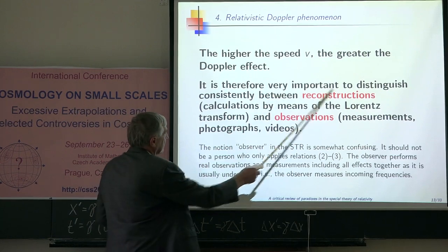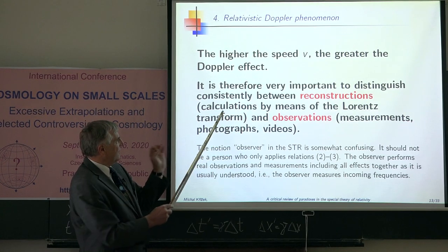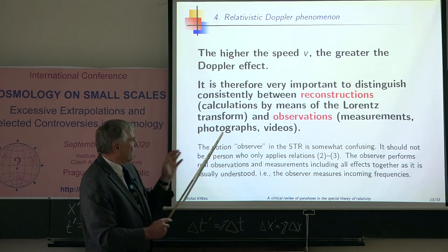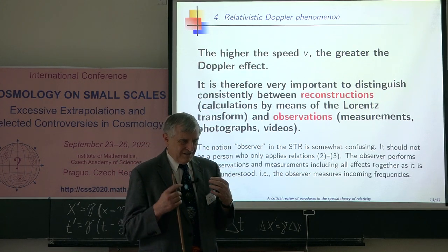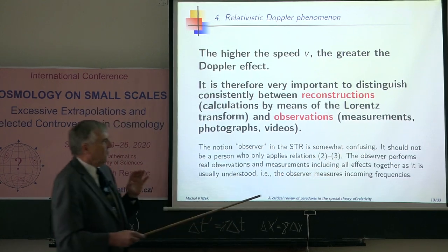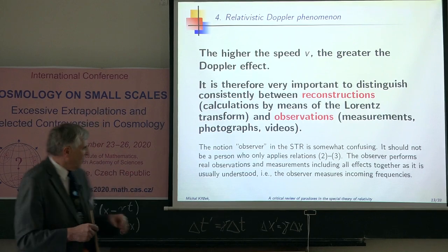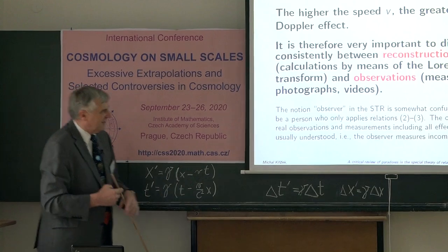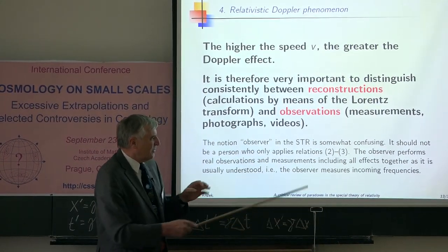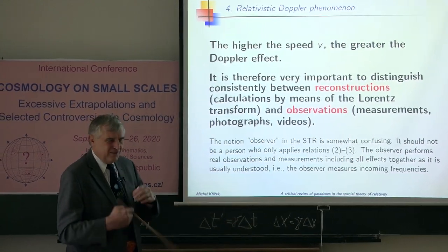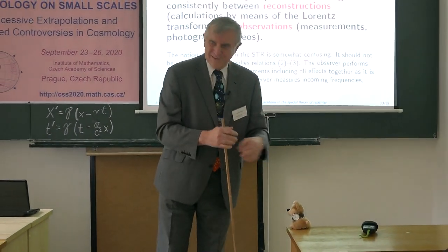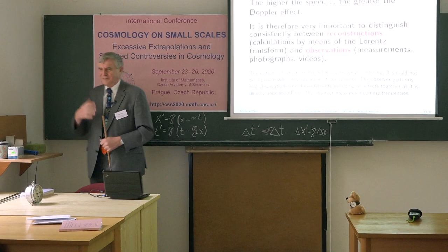Therefore, it is very important to distinguish consistently between reconstructions, this means calculations by means of the Lorentz transform, and observations, this means measurements, photographs, videos. In my opinion, the notion of observer in special theory of relativity is somewhat confusing. It should not be a person who just substitutes values and calculates. It should be a person who does real observations and measurements, including all effects together, including Doppler phenomenon, aberration of light and so on. In my opinion, observer is what he really observes and not the guy who just calculates the Lorentz transformation.